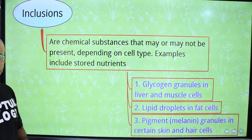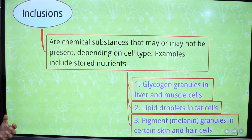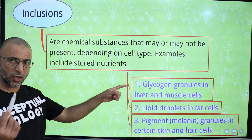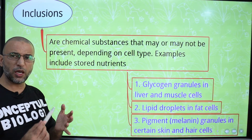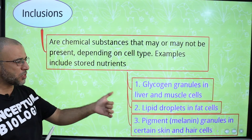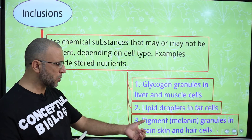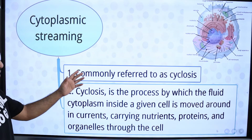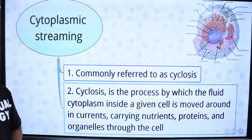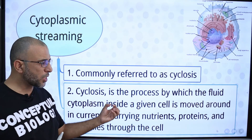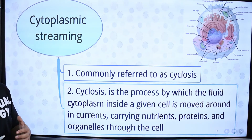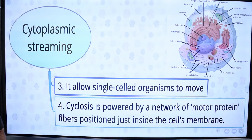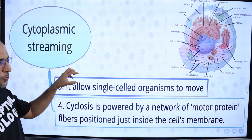What are inclusions? Inclusions are chemical substances that may or may not be present depending on cell type. Examples include stored nutrients like glycogen, which is stored in liver cells and muscles; lipid droplets stored in fat cells; and pigment melanin granules stored in skin and hair cells. What is cytoplasmic streaming? Cytoplasmic streaming, also known as cyclosis, is the process by which fluid cytoplasm inside a cell is moved around in currents, so that nutrients, proteins, and organelles move from one place to another. It helps unicellular organisms in their movement.